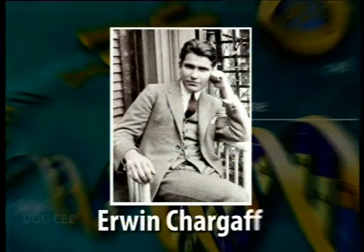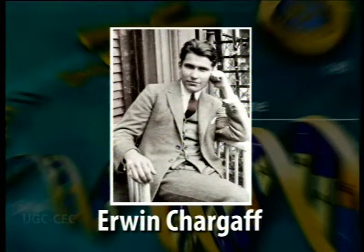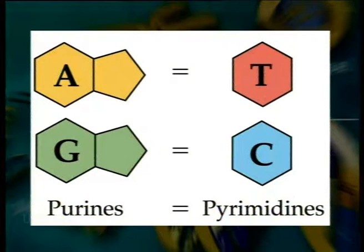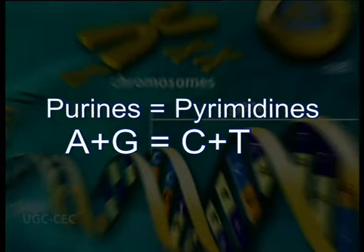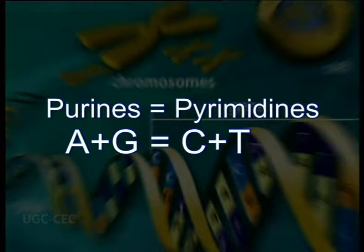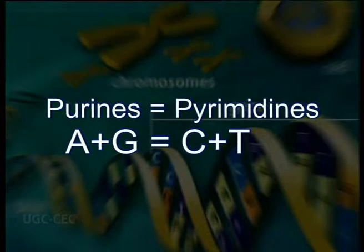However, chemical analysis of DNA from different species by Erwin Chargaff during the 1940s clearly demonstrated that in all DNAs, regardless of the species, the number of adenine residues equals the number of thymine residues, and the number of guanine residues equals the number of cytosine residues. From these relationships it follows that the sum of purine residues equals the sum of pyrimidine residues — that is, adenine plus guanine equals thymine plus cytosine. Therefore, in no case were the quantities of all four bases equal, which would be expected on the basis of Levene's assumption.